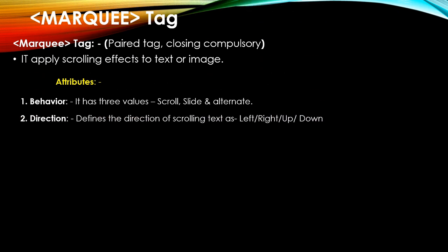The direction attribute gives the marquee a direction. Its values are left, right, up, or down — left is the default. The loop attribute defines how many times the marquee text moves; the value is given as a number. A value of minus one or infinite moves the contents continuously forever.